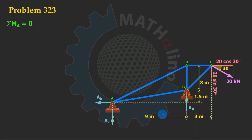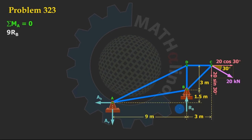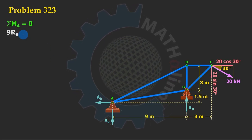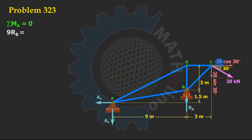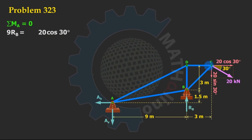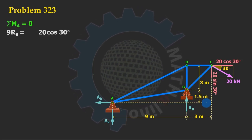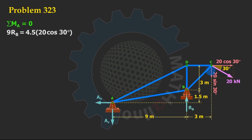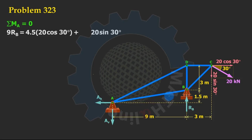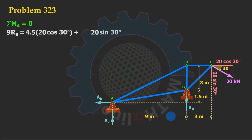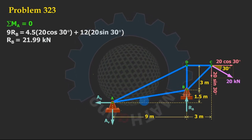Summation of moment at A equals zero. For the counterclockwise moment, we have RB with moment arm 9, so 9 times RB equals the clockwise moments. The clockwise moment from 20 cosine 30 has a moment arm of 4.5, and 20 sine 30 also rotates clockwise about A with moment arm 12. Solving for RB, we get 21.99 kilonewtons.